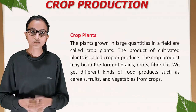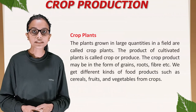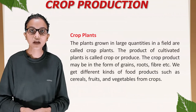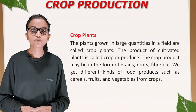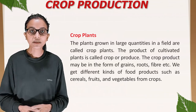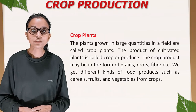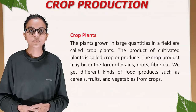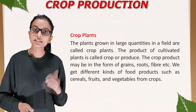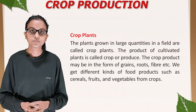Crop plants: the plants grown in large quantities in a field are called crop plants. The product of cultivated plants is called crop or produce. The crop product may be in the form of grains, roots, fiber, etc. We get different kinds of food products such as cereals, fruits, and vegetables from crops.